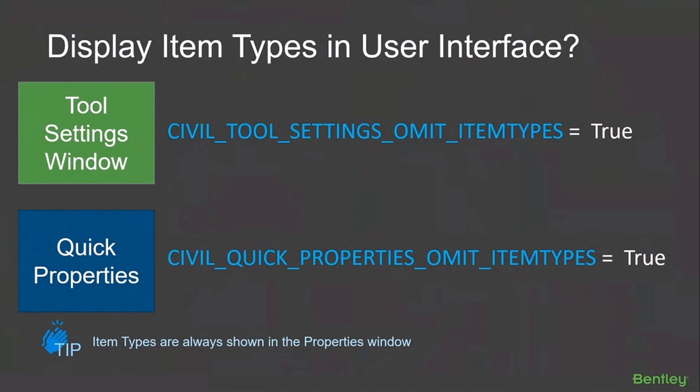Now, remember item types are always available in the properties window. There's no way to turn those off — they're always going to be there.